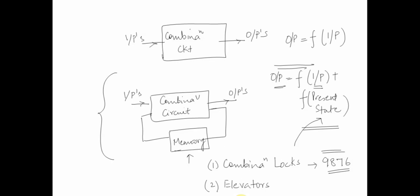Most importantly for us, computers are also sequential. Key presses and mouse clicks have different effects based upon which program is loaded into memory and what the state of the program is. This is the basics about sequential circuits — they are a combination of combinational circuits with a set of memory, so output depends not only on the present input but also on the present state.